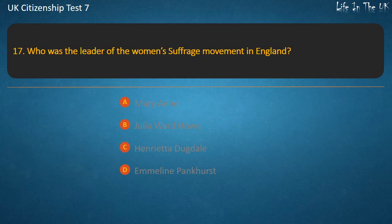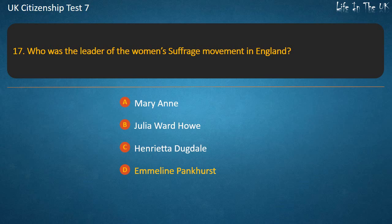Question 17: Who was the leader of the women's suffrage movement in England? Options: Mary Ann, Julia Ward Howe, Henrietta Dugdale, Emmeline Pankhurst. Answer: Emmeline Pankhurst.